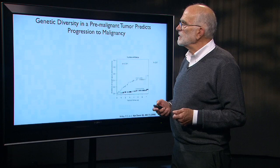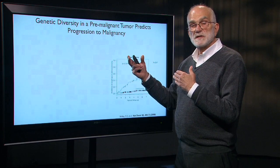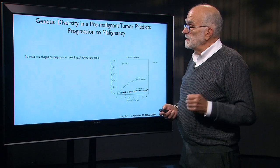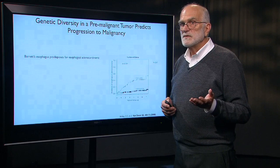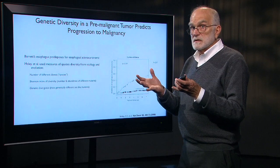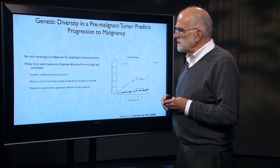If we ask how important is the genetic diversity of a tumor to the probability it will progress to metastasis and malignancy, a study of Barrett's esophagus — a condition predisposed for esophageal adenocarcinoma, a pretty lethal kind of cancer — used measures from ecology and evolutionary biology to characterize exactly how diverse the clones were: the number of different clones, a Shannon index of diversity, and genetic divergence.